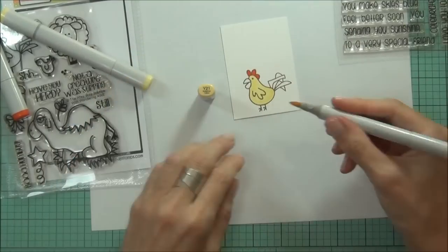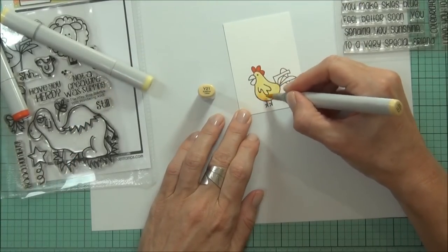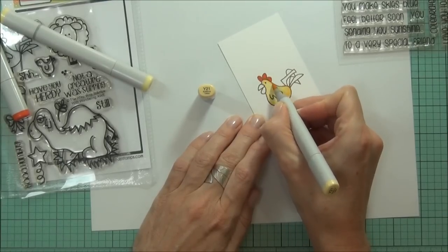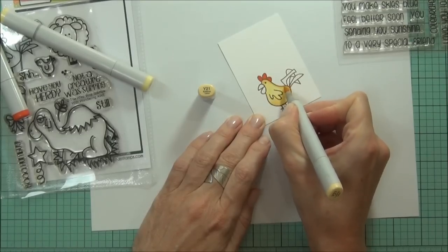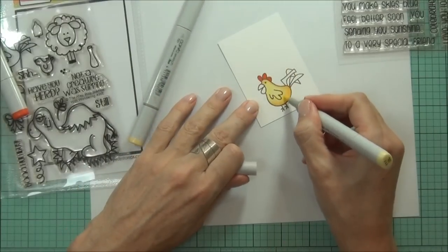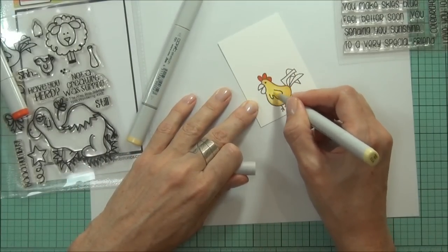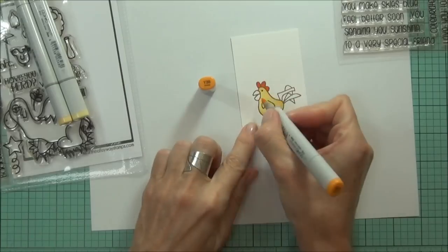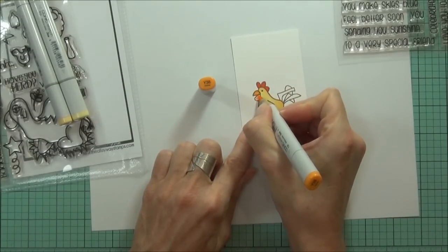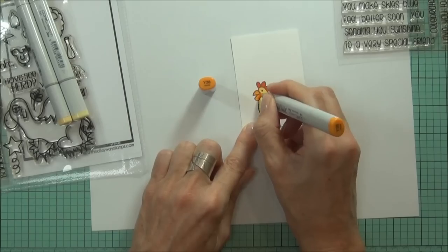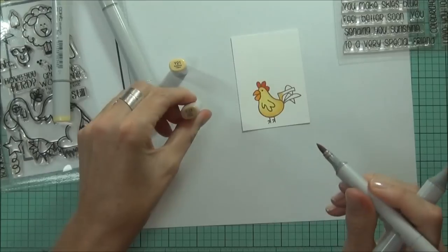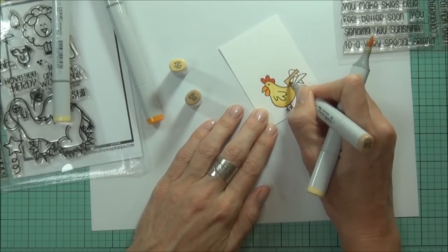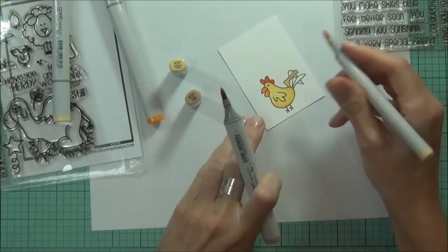I've got some Y21. And then back with the Y11 again just to blend that back in. I'll use my Y38 for the beak and some Y21 and Y31 on the tail feathers.